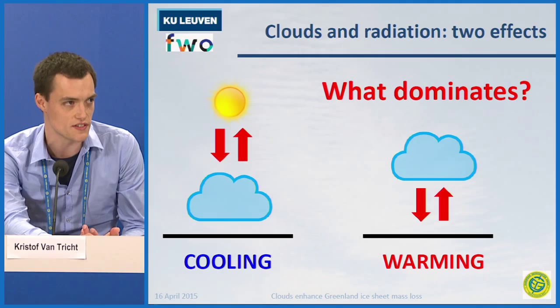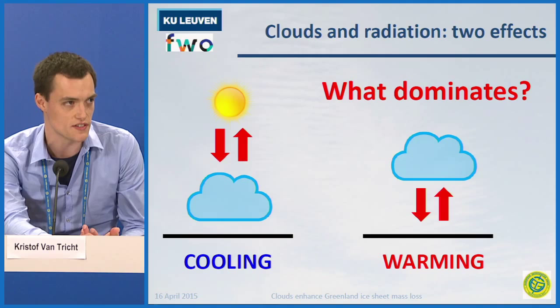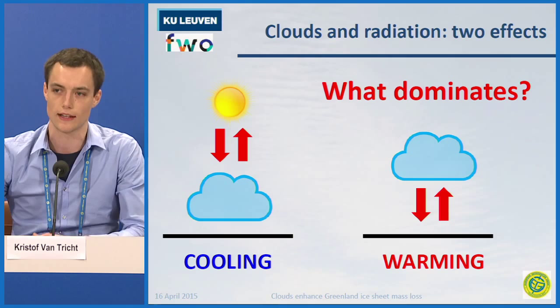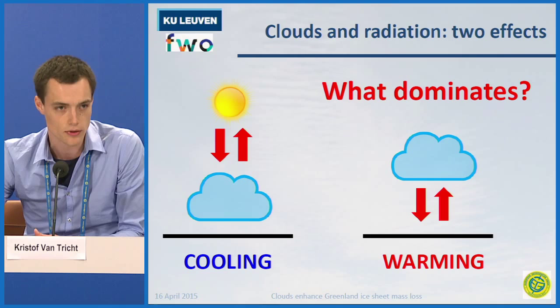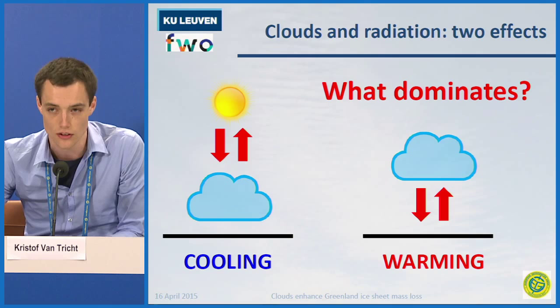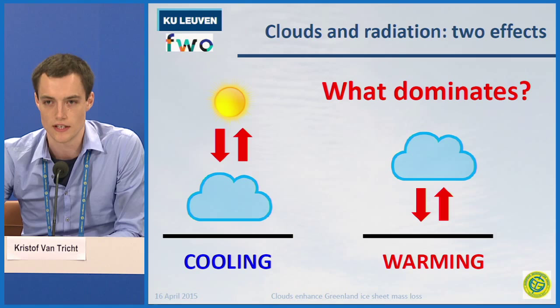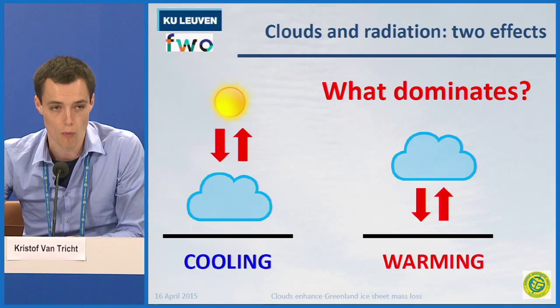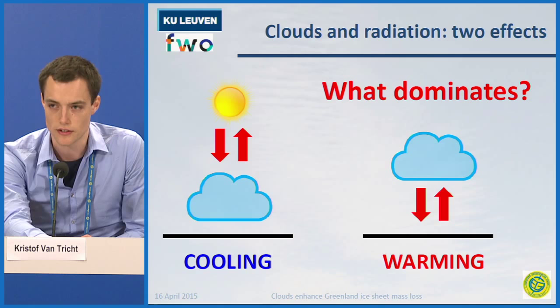How do clouds influence energy? Well, everyone knows the answer. If you'd be outside today, you'd feel comfortable temperatures, and you'd probably be annoyed when a cloud passes by and covers the sun, because you'd feel temperatures slightly drop — the well-known cooling effect of clouds, because they reflect part of the incoming sunlight, impeding heating of the Earth's surface. But if you'd be outside tonight, you'd feel the reverse: under clear skies, temperatures drop more quickly than they would under a cloudy sky. These two effects together determine the ultimate impact of clouds on the energy balance.